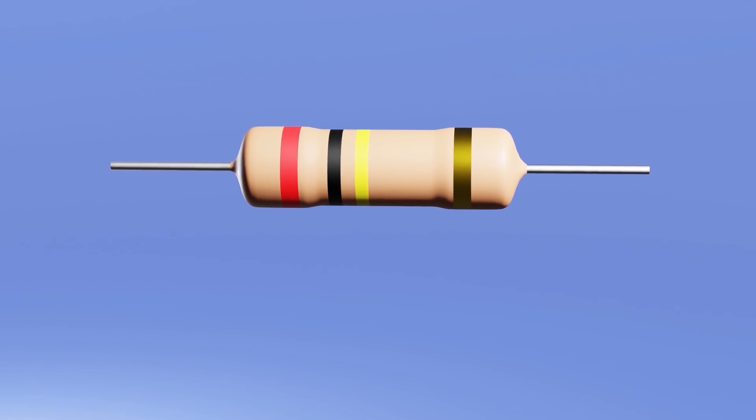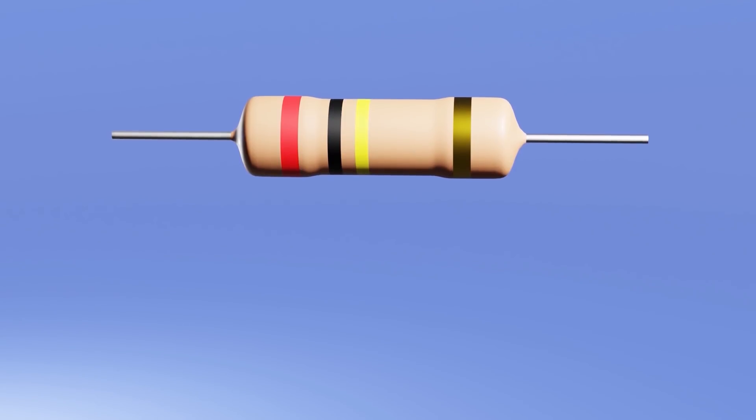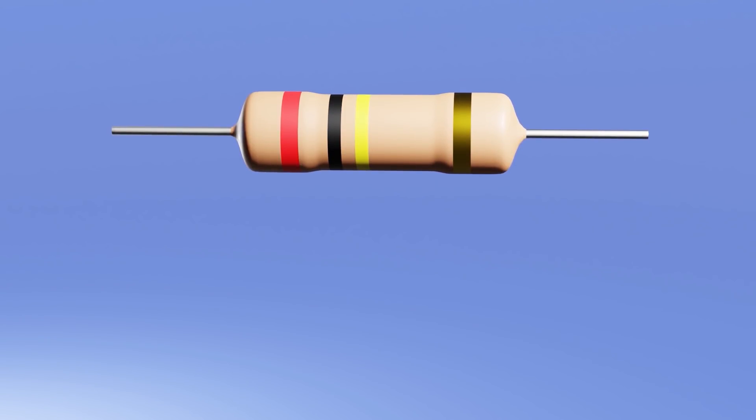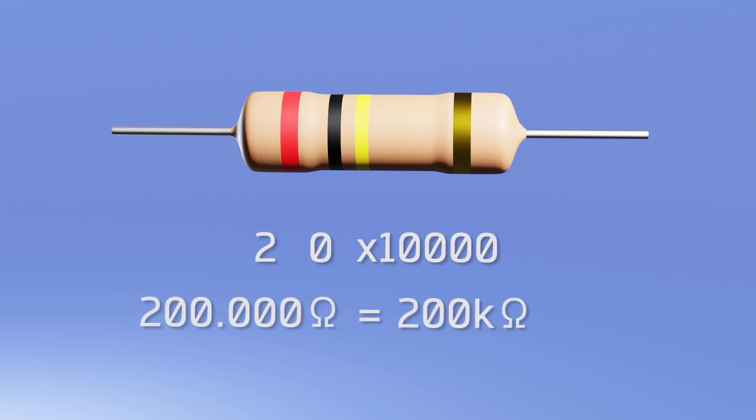For example, this is a resistor of 200 kilo ohms. The way to read its value is as follows. The first and second bands correspond to digits from 0 to 9, in this case red is 2 and the black is 0. Then, the third band corresponds to a multiplier to avoid the need to put many black bands when representing large values. In this case, the yellow band means that you have to multiply by 10,000. 2.0 per 10,000 gives us 200,000 ohms, or 200 kilo ohms.